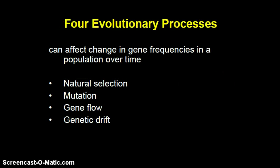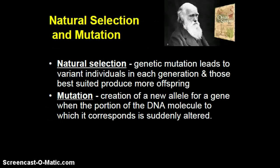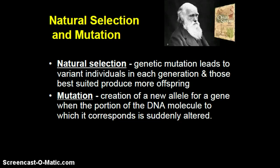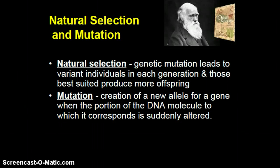The four evolutionary processes that can affect changing gene frequencies in a population over time include natural selection and mutation, as discussed by Alfred Russell Wallace and Charles Darwin, as well as gene flow and genetic drift. Darwin and Wallace's work on natural selection notes that it occurs when genetic mutation leads to varying individuals in each generation, and those which are best suited produce more offspring — hence it's not survival of the fittest per se, but those best suited to a particular environment. Mutations are the creation of a new allele for a gene, corresponding to a sudden alteration of a portion of the DNA molecule, affecting traits like hair color and eye color.